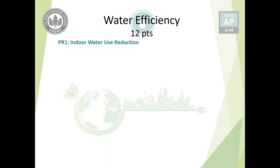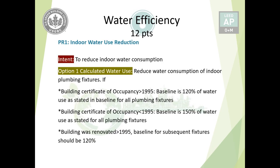Prerequisite number one is indoor water use reduction. The first option is the calculated water use, which is to reduce water consumption of indoor plumbing fixtures. Since it's an existing building, it could be tens of years old or relatively new, so they have three conditions: the certificate of occupancy was given after 1995, before 1995, or if the building was renovated after 1995.